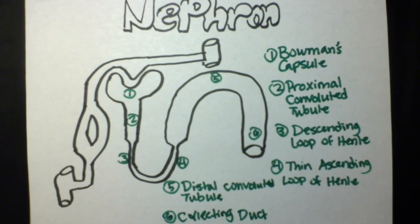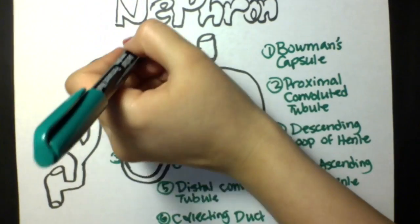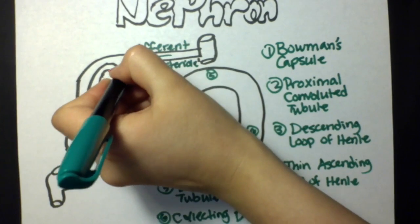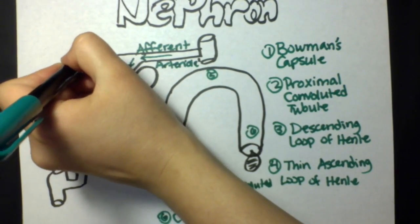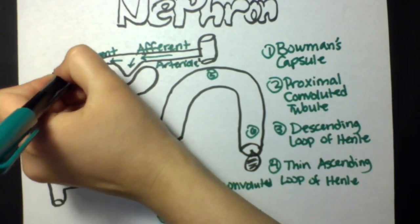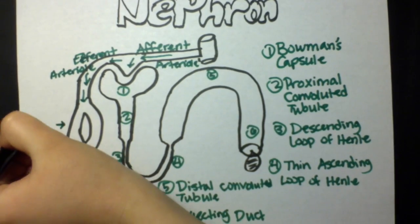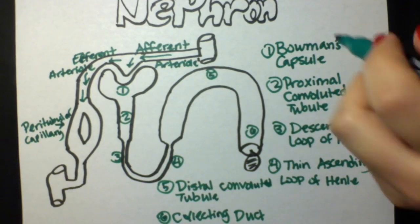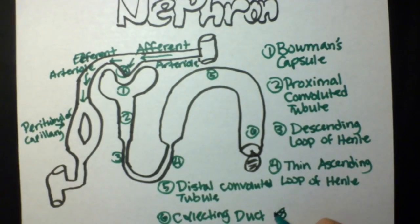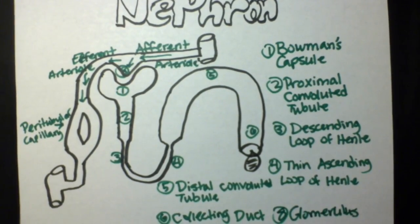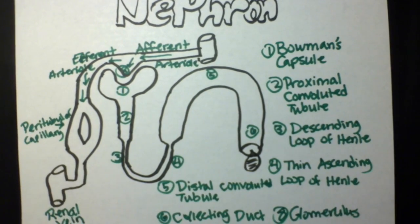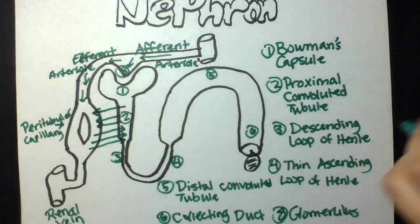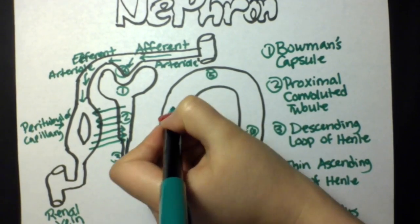As the urine accumulates, it goes into the collecting duct and is eventually excreted through the urethra. In the vascular system, blood moves through the afferent arterioles into the glomerulus, which is basically a bunch of capillaries that forms around the Bowman's capsule, and exits to the afferent arterioles going into the peritubular capillary and eventually out into the renal vein. As you can see, most of the reabsorption occurs through the proximal convoluted tubule, as well as secretion.